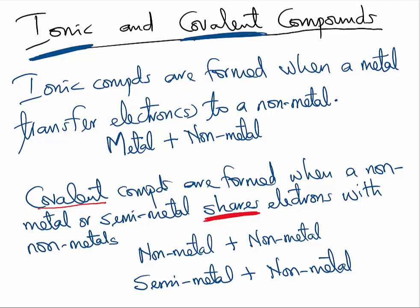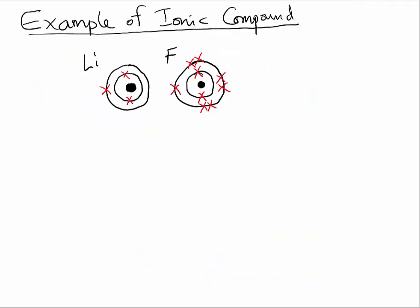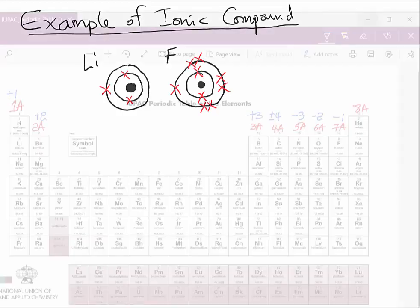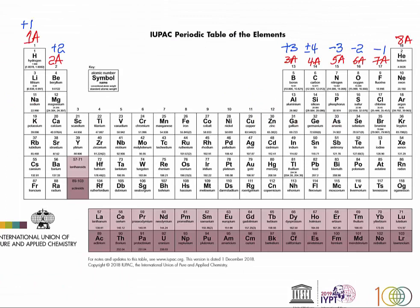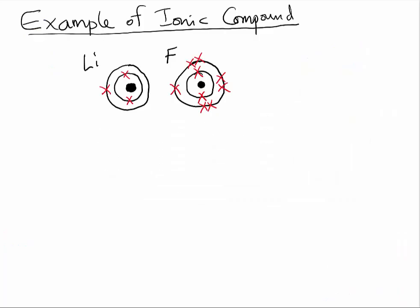Let us take a look at an example of how ionic compounds are formed. Take a look at these two atoms — here we have lithium and fluorine. Lithium is element number three in the periodic table, and fluorine is element number nine. That is why you have the electrons arranged as you see in the Bohr's model of an atom.